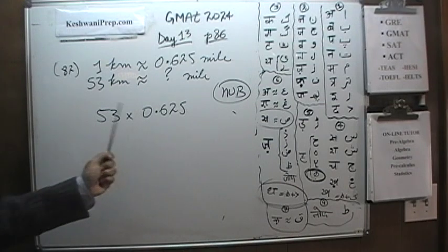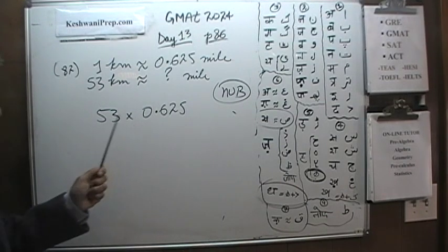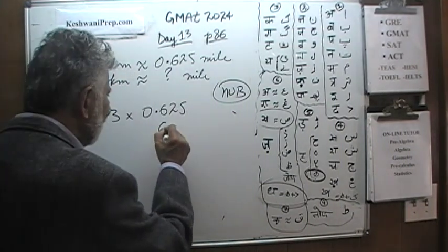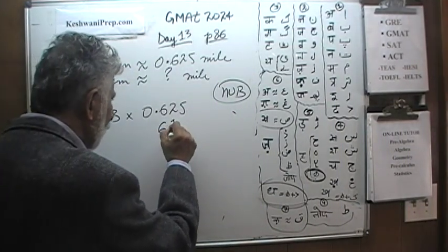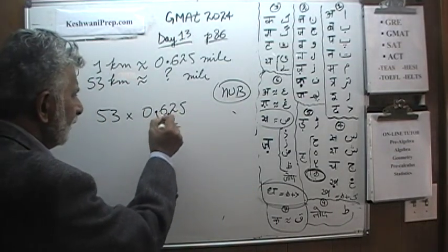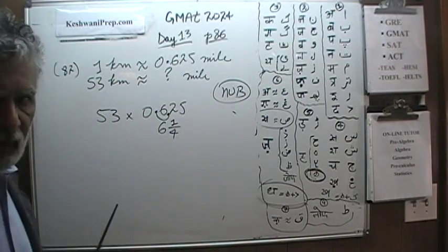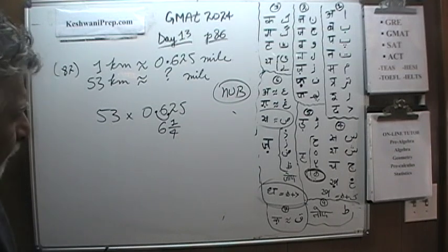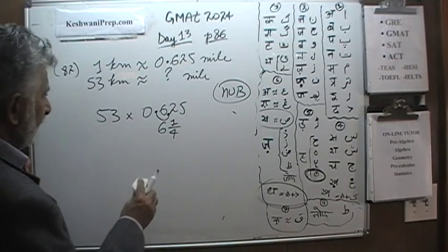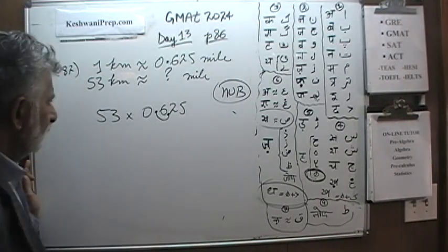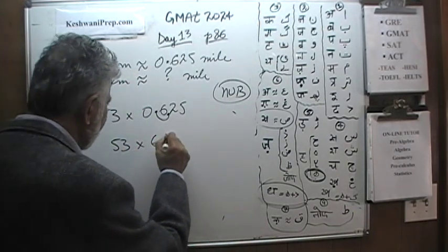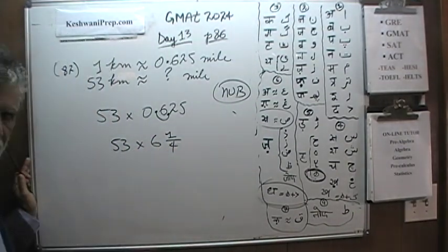But instead of multiplying by a decimal, let's pretend that 0.625 is 6.25 - move the decimal point one place to the right. Then when we finish our work, we'll just move it back one place. In other words, we're going to first multiply by 10, then divide our answer by 10. So we'll calculate 53 times 6 and a quarter.